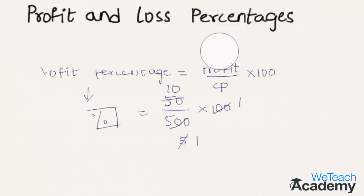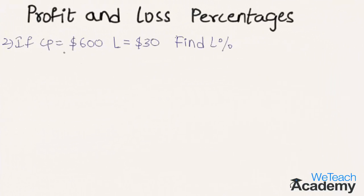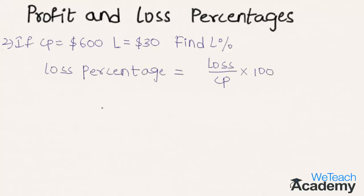Let us solve another example. If cost price is $600 and the loss is $30, we have to find the loss percentage. The loss percentage is given by loss divided by cost price multiplied by 100. Substituting, we get $30 divided by $600, multiplied by 100. Simplifying, 100 times 6 is 600.